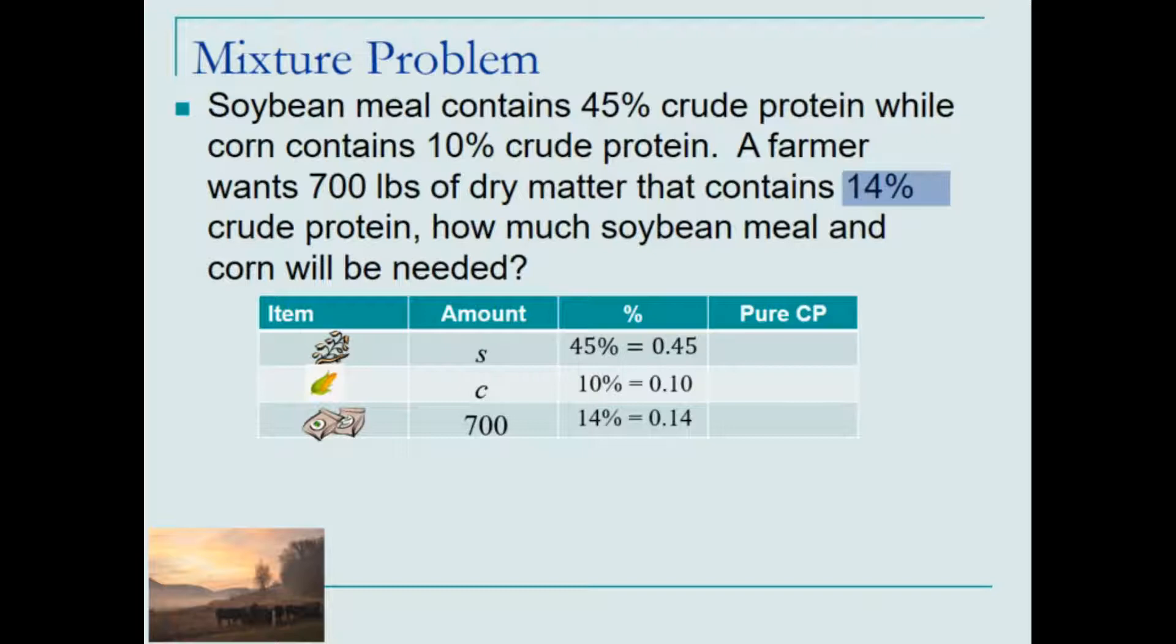To find the pure CP, which is short for crude protein, we will take the gross amount times the percentage. And to illustrate that so that you can see that, let's start at the bottom where we have numbers.